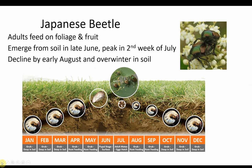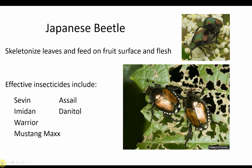The last insect is Japanese beetle. This iridescent insect emerges from the soil in late June with peak infestations occurring about mid-July, and then their numbers decline by early August. Japanese beetle will skeletonize leaves and when they feed on the fruit, it becomes marred. Products such as Sevin, Assail, Imidan, Danitol, Warrior, and Mustang Max are effective against Japanese beetles.